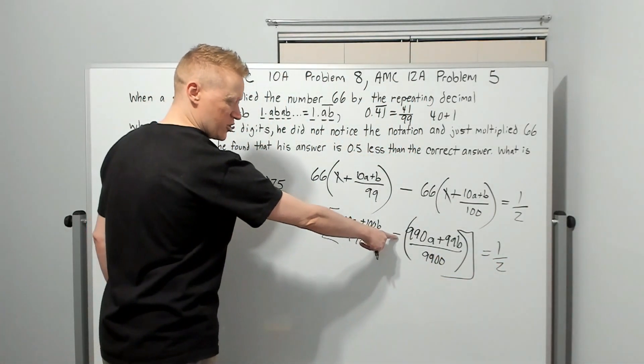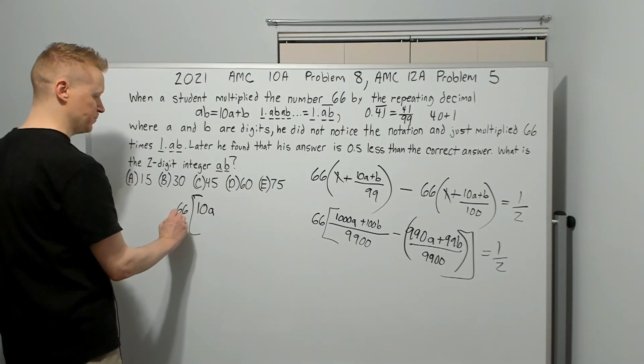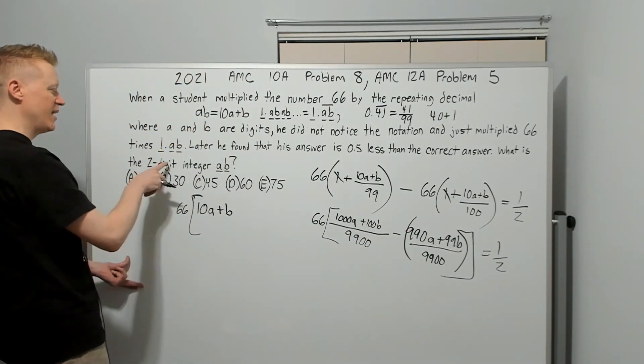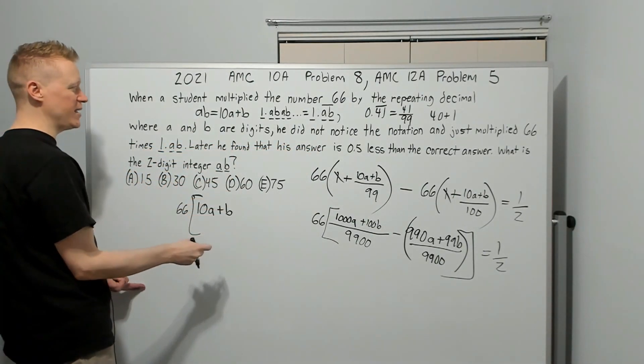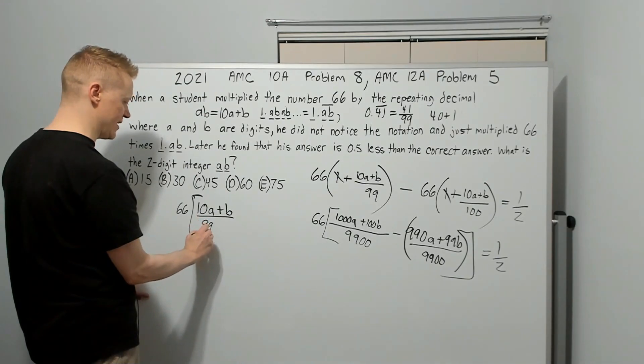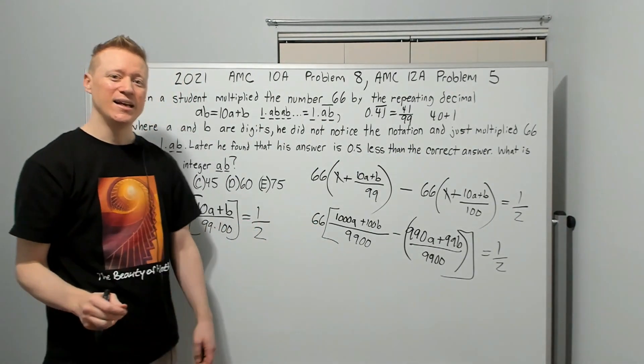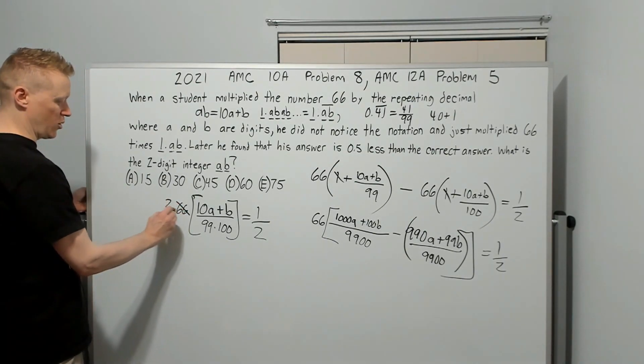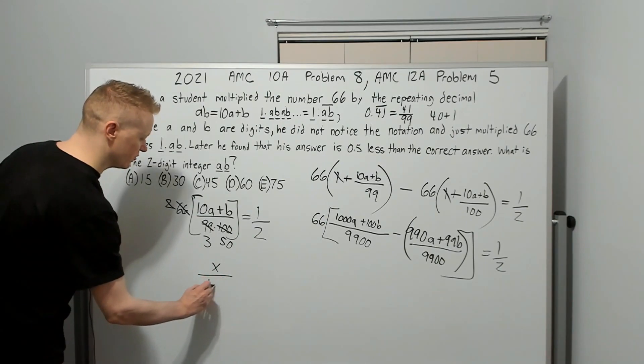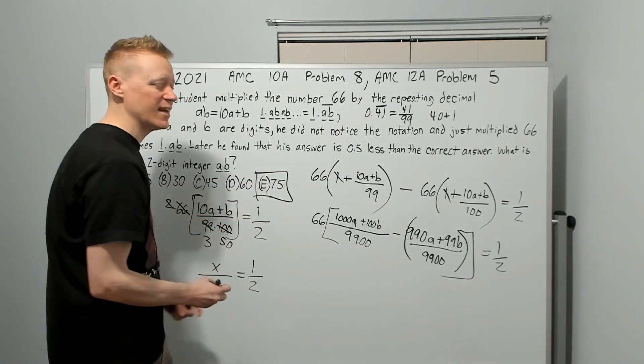Now we have common denominator. We're going to distribute this minus sign. 1000A minus 990A is 10A. There's still this 66 out front. 100B minus 99B is B. Wait, that looks familiar. That's the number AB. And it says, what is the two-digit integer AB? So since these are equivalent values, this is the answer when we get it. So then this is over 99 times 100. 33 goes into here twice, 33 goes into here three times. 2 goes into 100 fifty times. And you're now going to have what you want over 150 equals 1 half. Multiply by 150, half of 150, 75. Answer choice E.